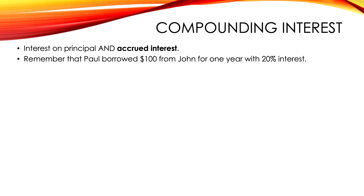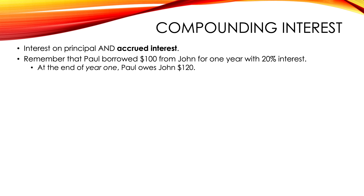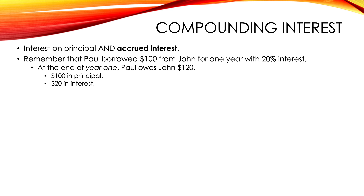In the previous video, Paul borrowed $100 from John for one year with 20% interest. At the end of year one, Paul owed John $120. $100 of that was principal — the original amount borrowed — and $20 of that was the interest. 20% of 100 is 20. That's the example from the previous video.